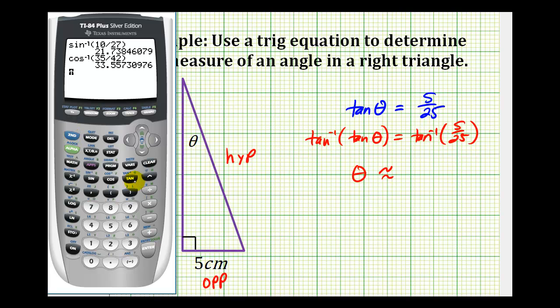Inverse tangent will be second tangent, five divided by twenty-five. So, theta is approximately eleven point three degrees.